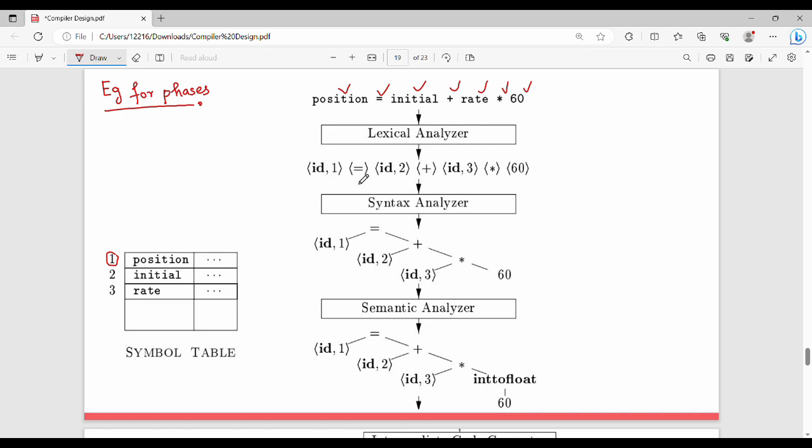Then what do we do with the identifiers? Where are the operands? The position is id1, the id is just a name. In the symbol table, we have a location where is the position. The symbol table location 1. Id1 equal to, the operator is stored in the symbol table. Then id2, which is initial, is in symbol table location 2. Id2 plus id3, where id3 is the rate. This is stored in the symbol table.